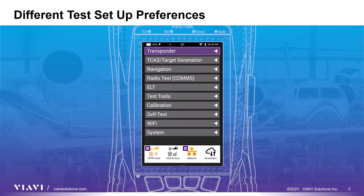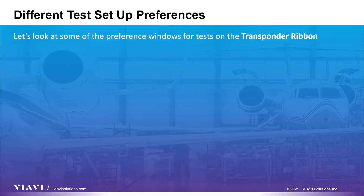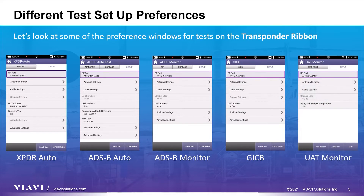Let's begin by looking at the test applications in the transponder ribbon, which include transponder auto, ADSB auto, ADSB monitor, GICB, and UAT monitor. The general setup panels for each test have many common settings: connection type, coupler or antenna loss, cable length, and cable loss.